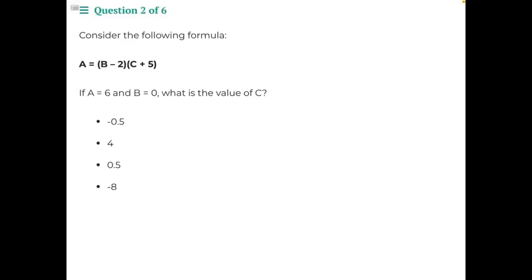Consider the following formula. A equals B minus 2 times C plus 5. If A equals 6 and B equals 0, what is the value of C?